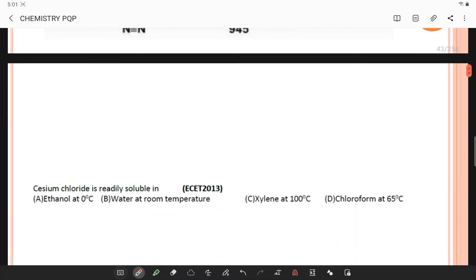Coming back to the next question: Cesium chloride is readily soluble in... If you observe the physical properties of cesium chloride, it is soluble in water at room temperature. It is readily dissolvable in water with a maximum solubility increasing from 1865 grams per liter to 2705 grams per liter.